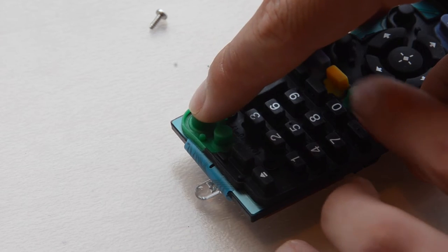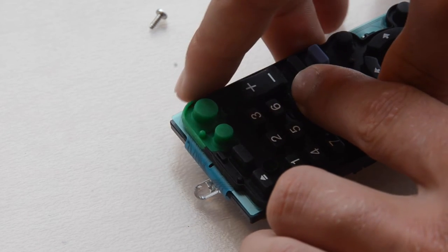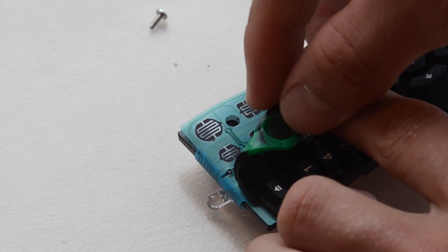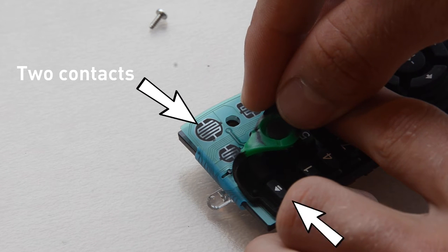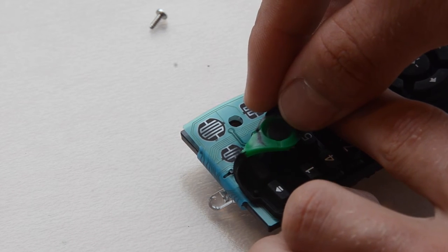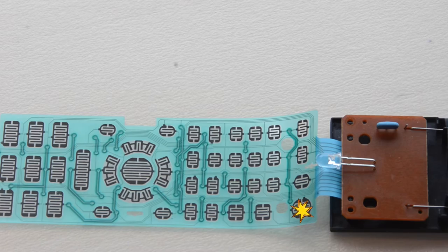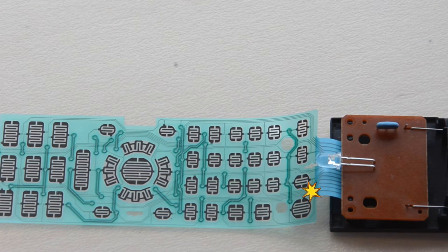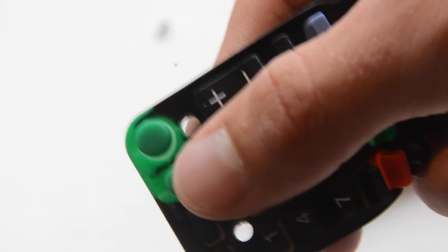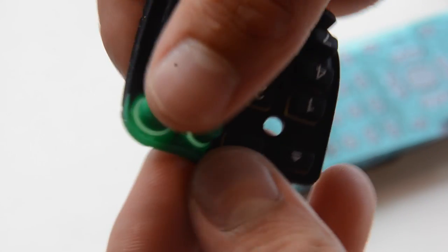When a button is pressed on the remote, for example the on-off button, a small metallic pad is lowered onto two contacts located on the plastic film directly under the button. This sends a signal to the integrated circuit board at the front of the remote control. Each individual button sends a different signal.